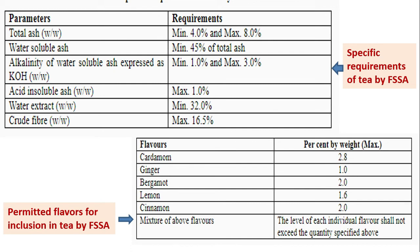Parameters and requirements for tea by FSSAI: total ash content minimum 4% and maximum 8%; water-soluble ash minimum 45% of total ash; alkalinity of water-soluble ash expressed as potassium hydroxide minimum 1% and maximum 3%.